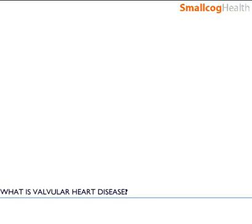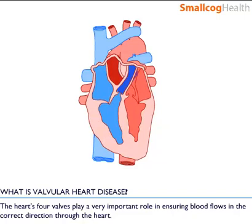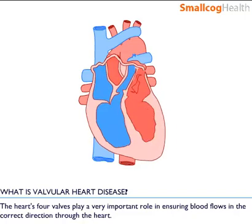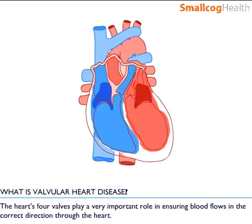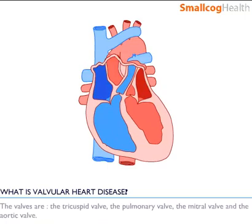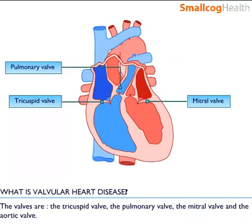What is valvular heart disease? The heart's four valves play a very important role in ensuring blood flows in the correct direction through the heart. The valves are the tricuspid valve, the pulmonary valve, the mitral valve, and the aortic valve.